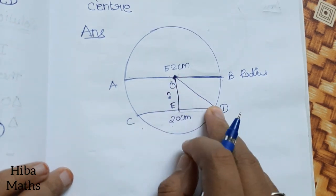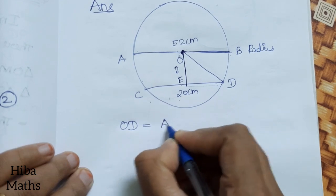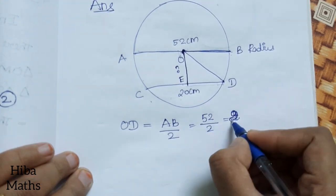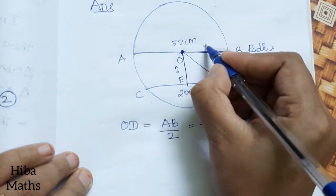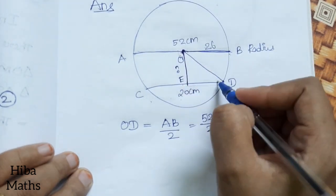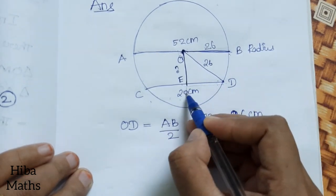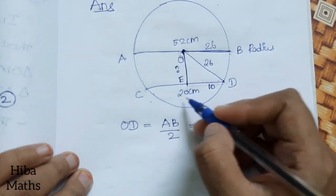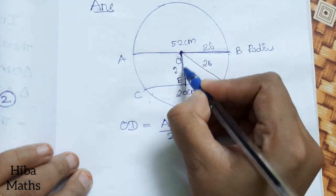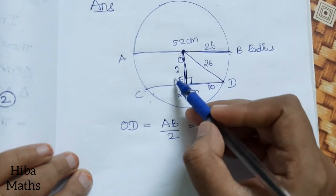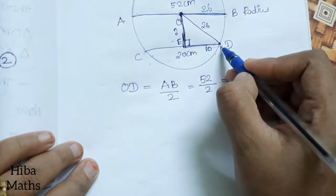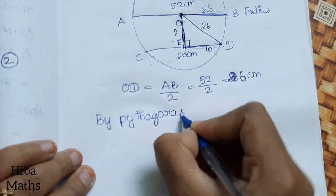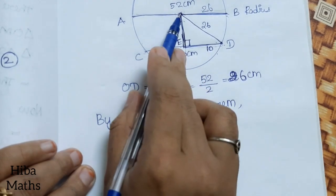So first, OD is equal to AB divided by 2, that is 52 divided by 2 — which gives 26 cm. So OD is 26 cm. Now CD is equal to ED, so CD is equal to 20 divided by 2, which is 10. Now this is a right angle triangle. I will use Pythagoras theorem. This is O, this is D, and OD is the hypotenuse. By Pythagoras theorem, OD squared is equal to OE squared plus CD squared.